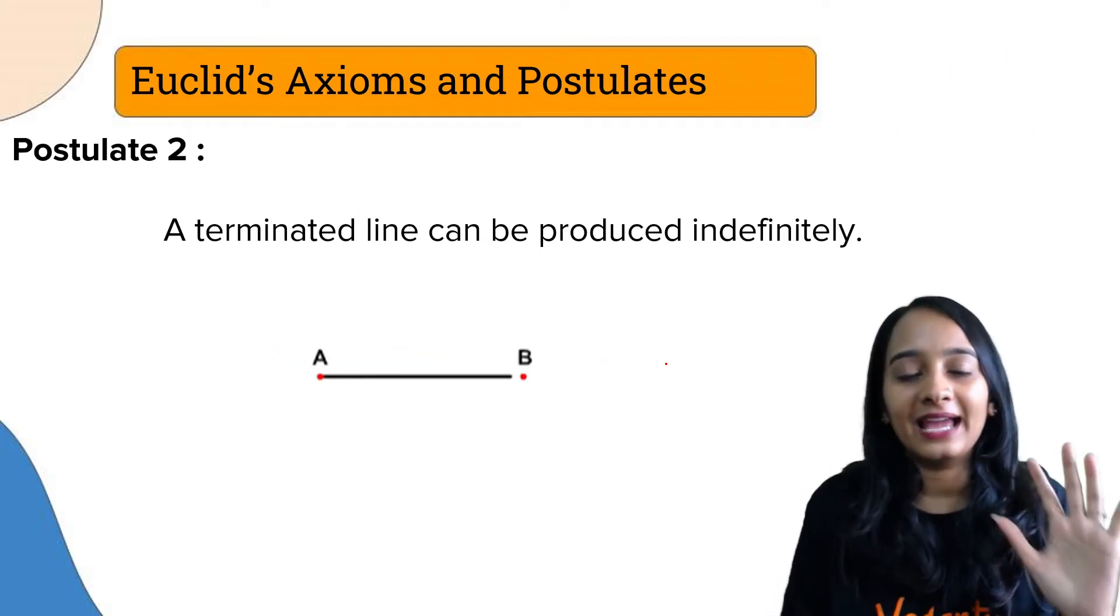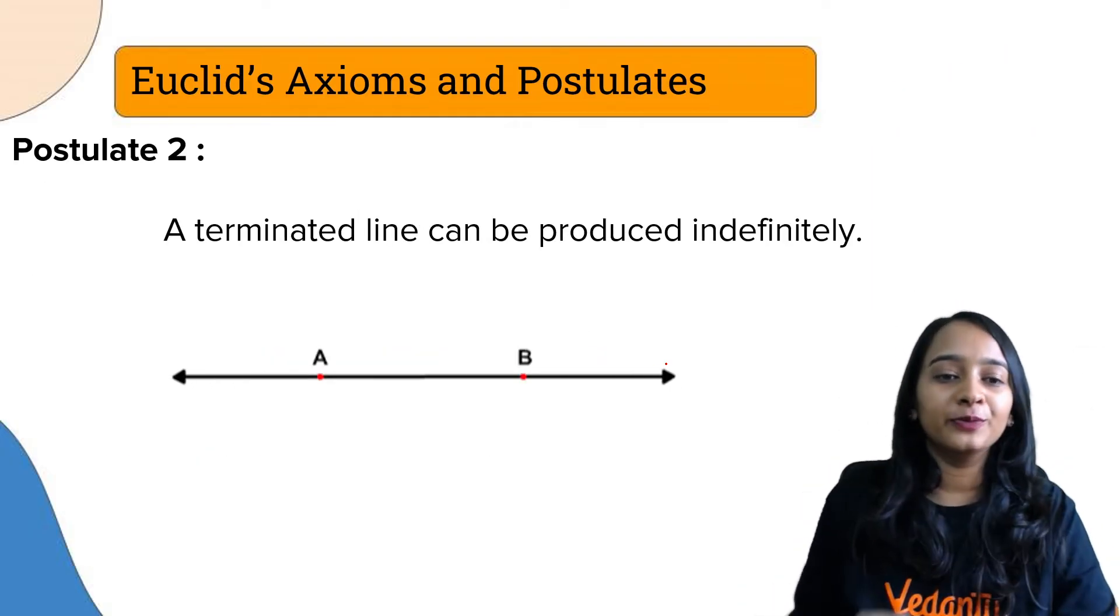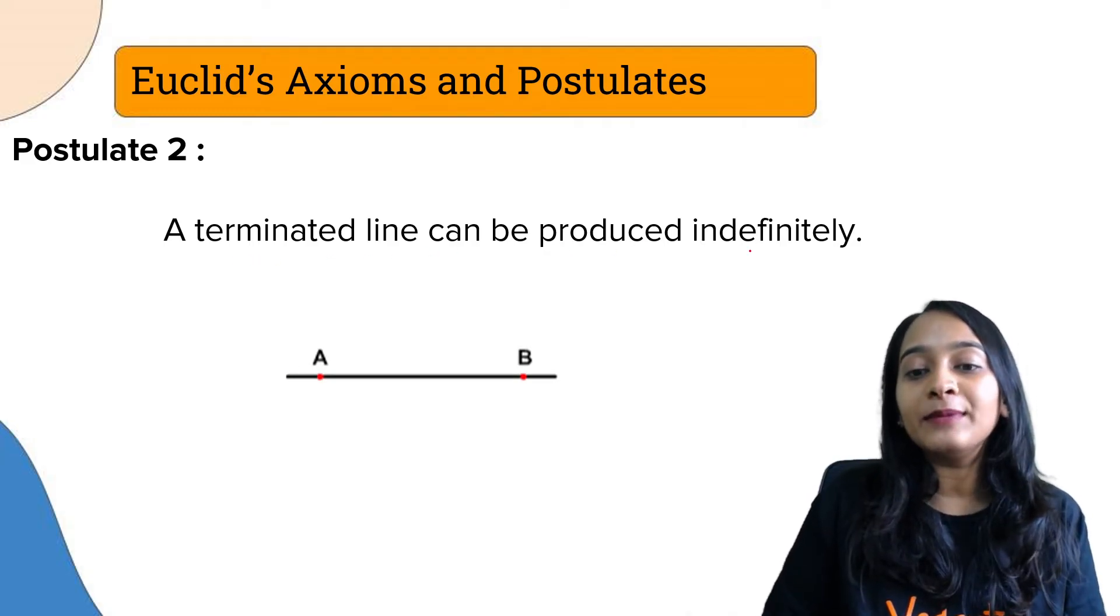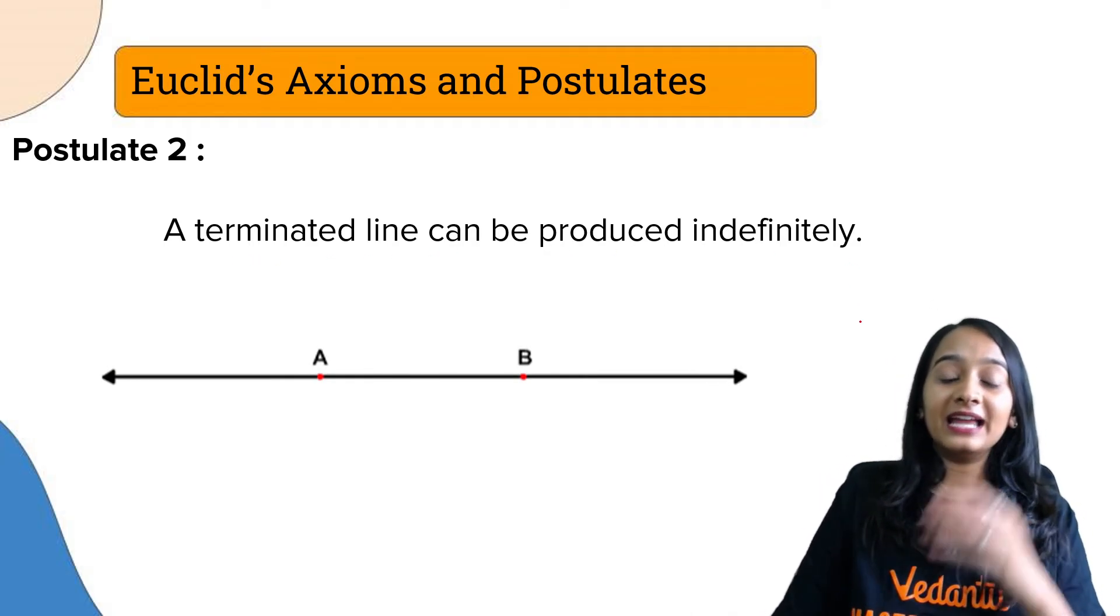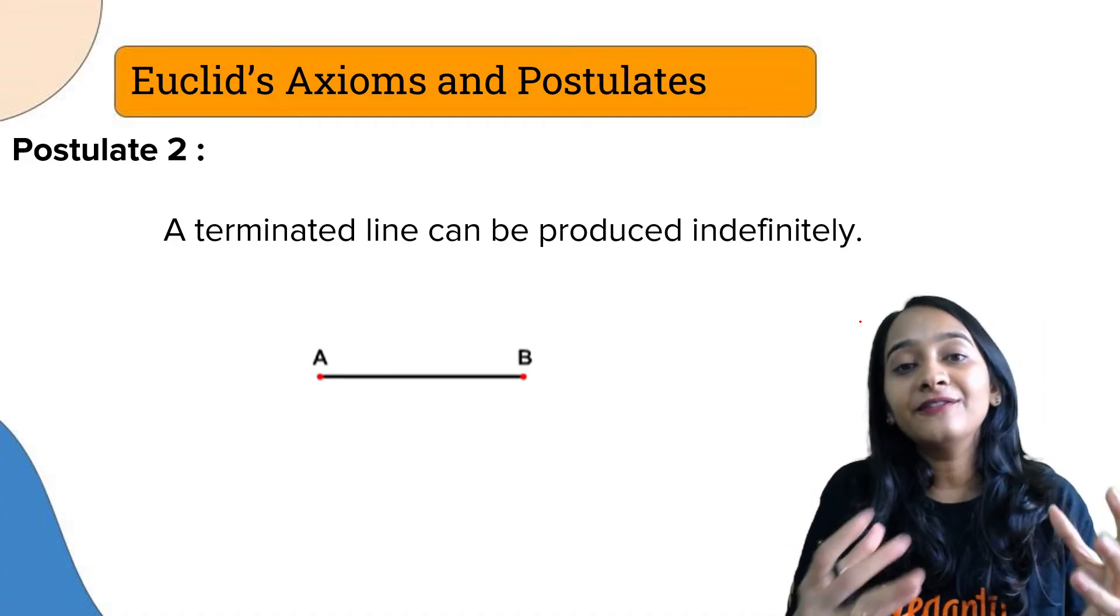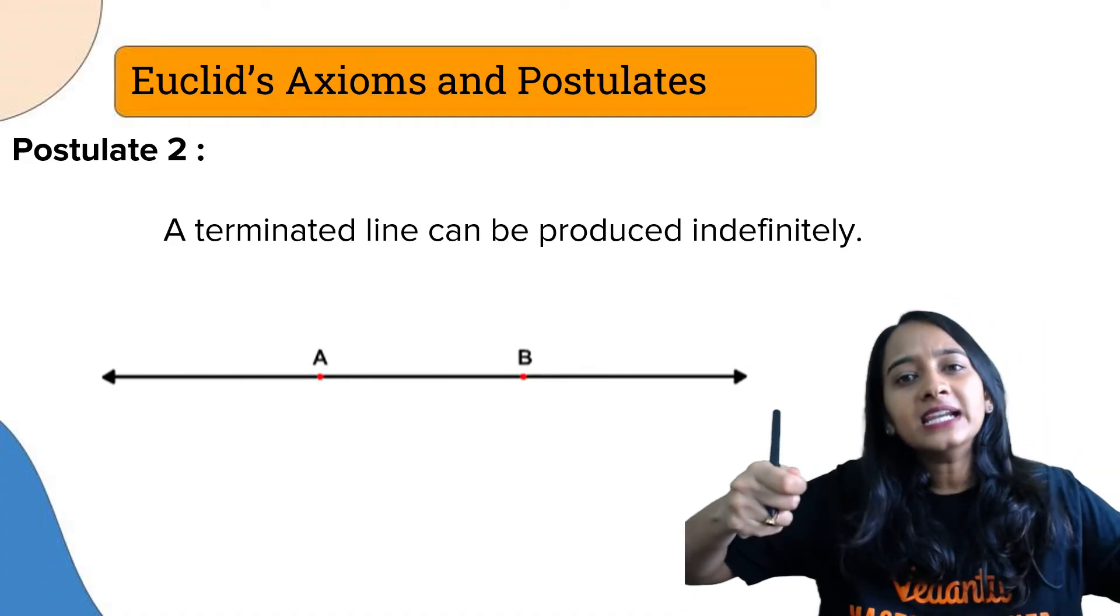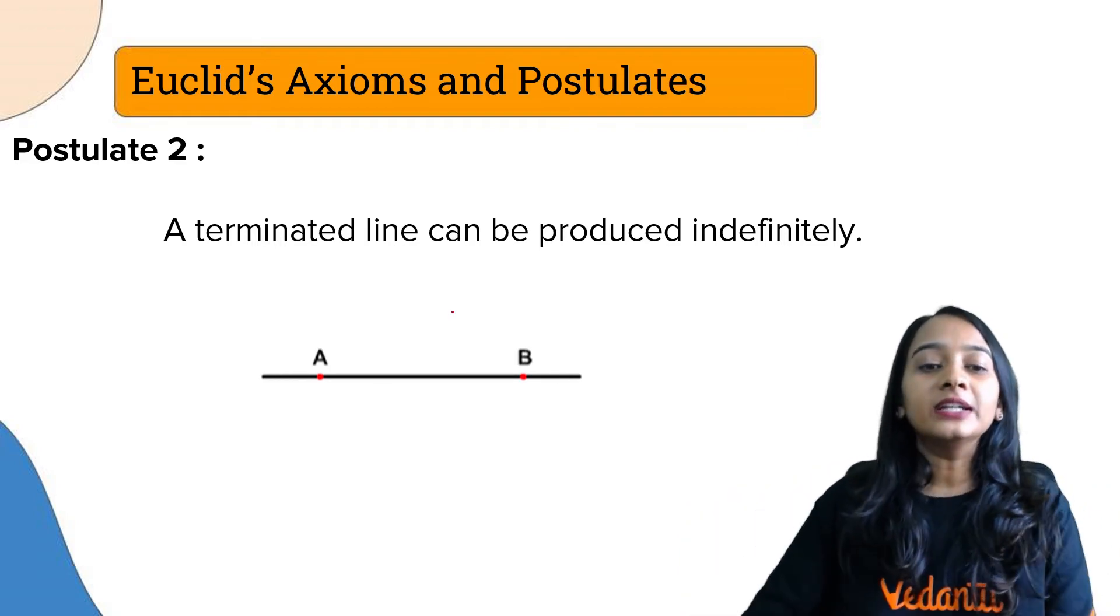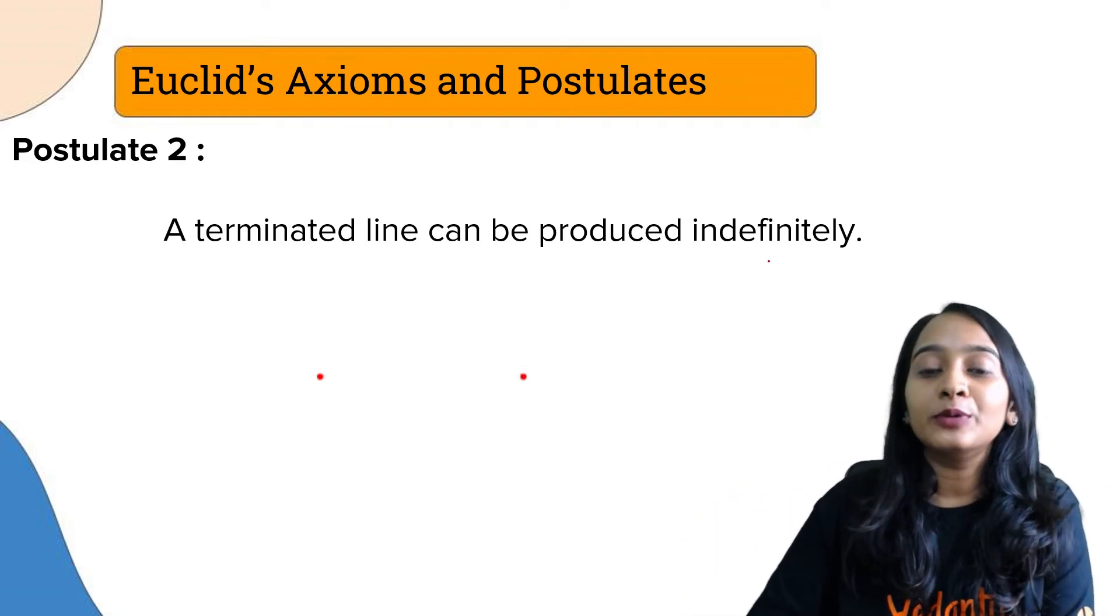Postulate number 2: a terminated line can be produced indefinitely. That is the definition of a line - you can extend it infinitely in both directions. It has no fixed length. That is postulate number 2.